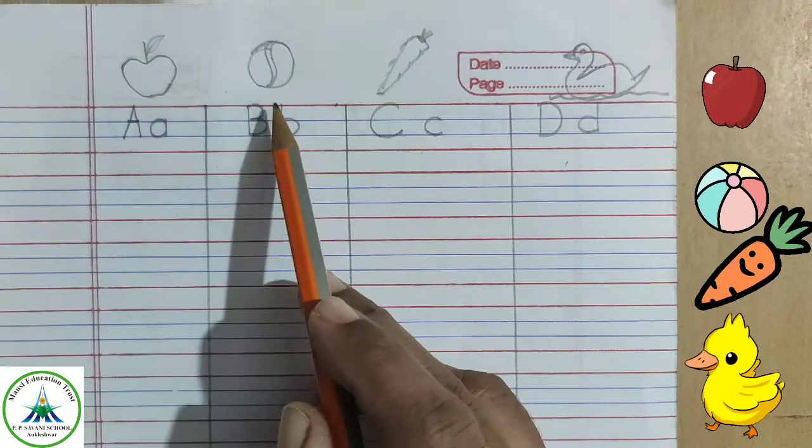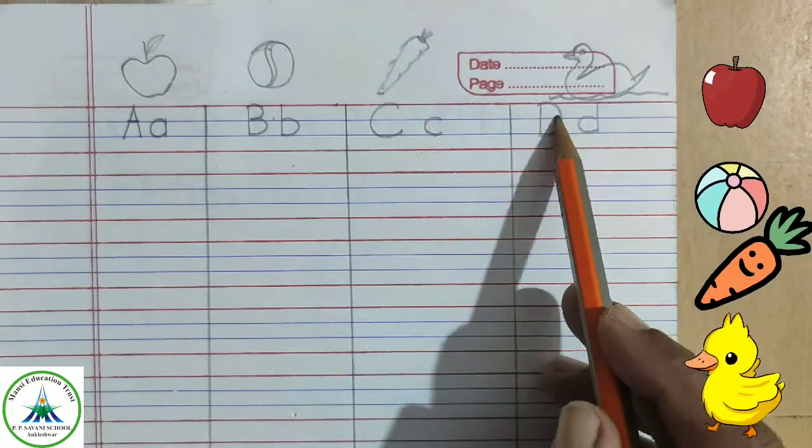A for apple, B for ball, C for carrot, D for duck.